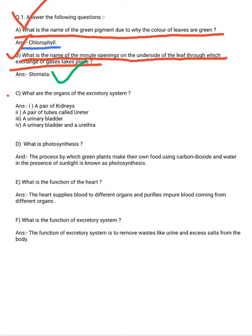Question number three: what are the organs of the excretory system? There are four organs associated with the excretory system. Number one is a pair of kidneys. Kidneys are bean-shaped, and the function of the kidney is to remove waste as urine and excess salt from our body.